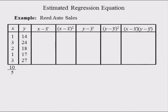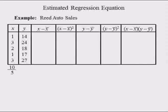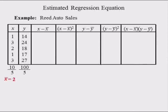The sum of the five observations of X is equal to 10. Dividing this by the sample size 5 yields a sample mean equal to two ads. The sum of the five observations of Y is 100. Dividing this by the sample size 5 yields a sample mean equal to 20 cars sold.